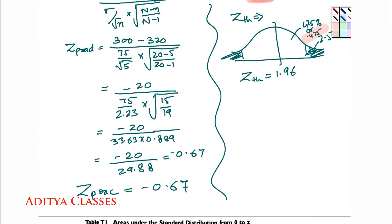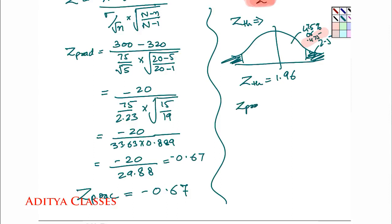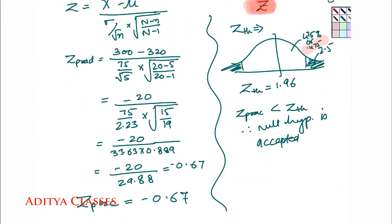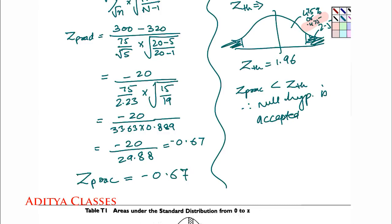So what will be my answer? My answer would be as z practical is less than z theoretical, therefore null hypothesis is accepted. And what was our question? Is there any difference? Can it be assumed to be consistent? Earlier it was 320, now for the sample it is coming as 300. So I was a bit worried that is this sample consistent or not? So always my null hypothesis is that sample is consistent, that the mean is same. So once again I will say that null hypothesis is accepted.